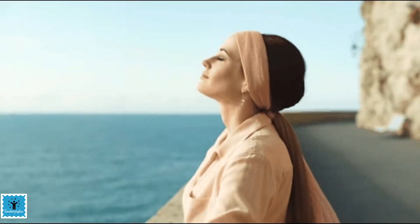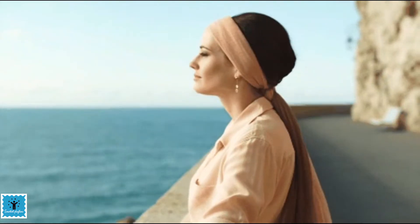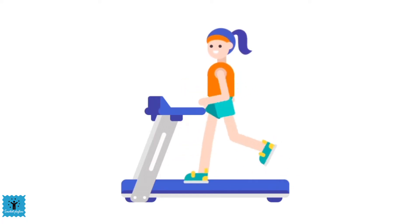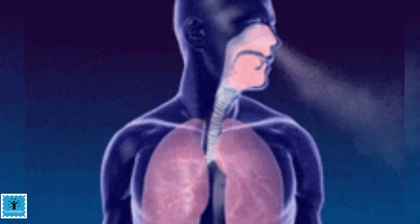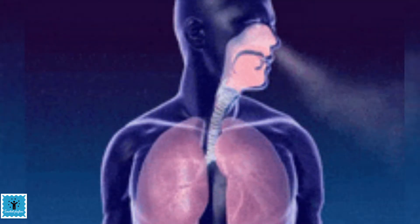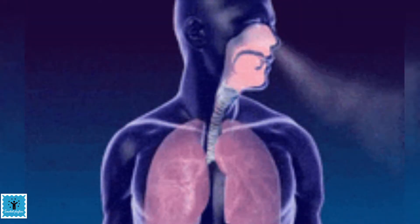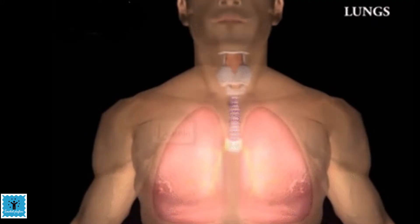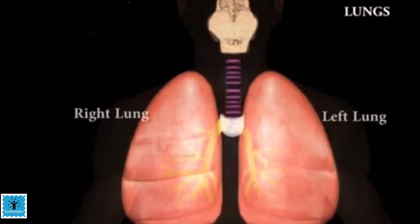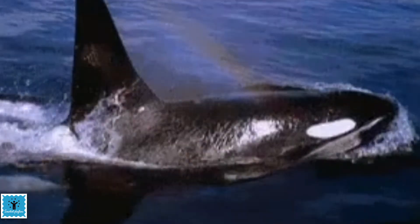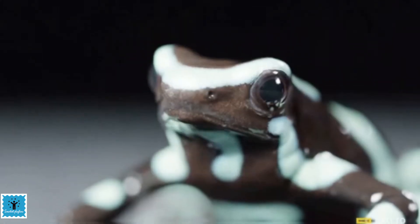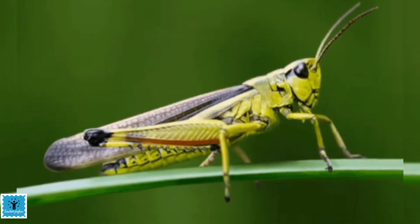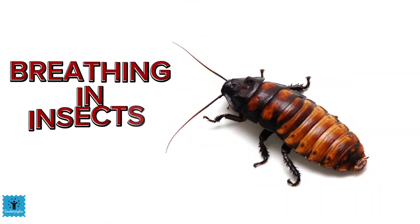Respiration is an important process in all living organisms. Living organisms respire to get energy. During breathing, we breathe in air which contains oxygen and breathe out air which is rich in carbon dioxide. In human beings, lungs help in this process. Today we are going to learn about the breathing mechanism in different organisms.